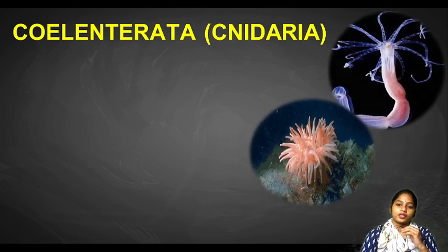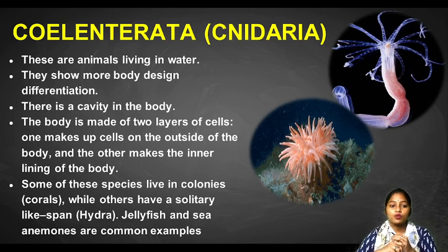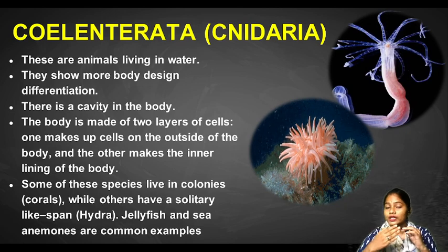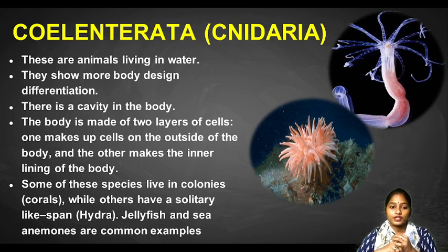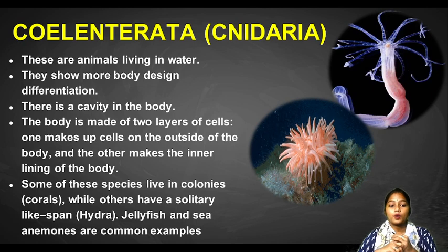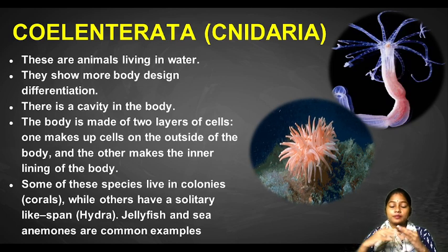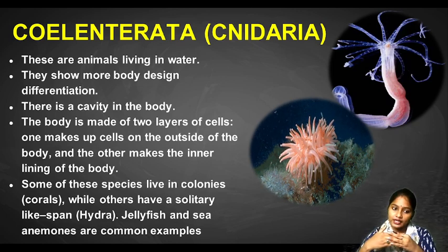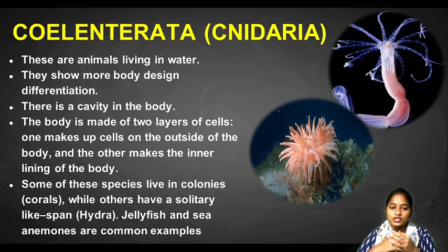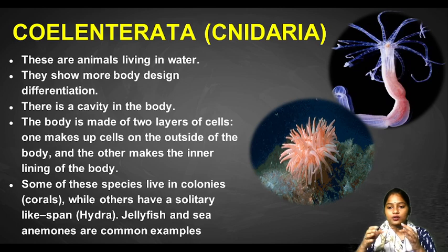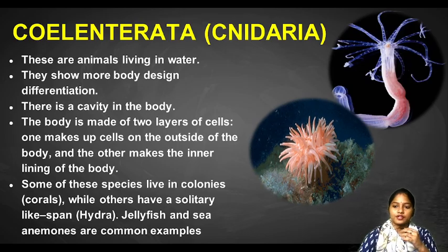Next is Coelenterata, that is Nidaria. These are animals living in water. They show more body design differentiation compared to sponges. There is a cavity in the body, and the body is made up of two layers of cells — one outside layer and one inner layer. Some of these species live in colonies and are called corals, while others like Hydra have a solitary lifespan. Jellyfish and sea anemones are also common examples.